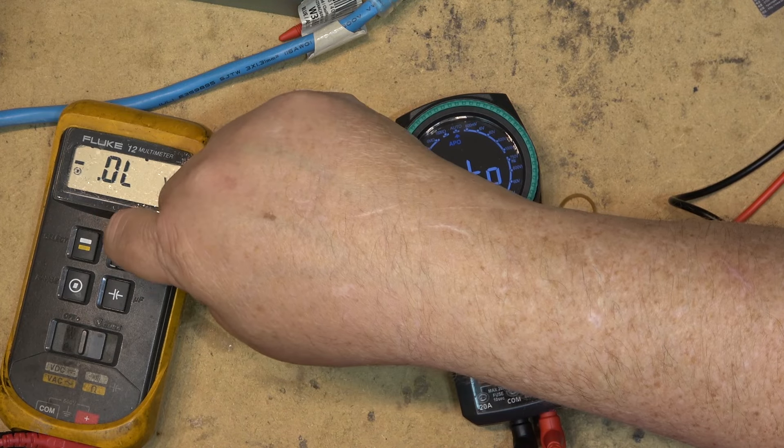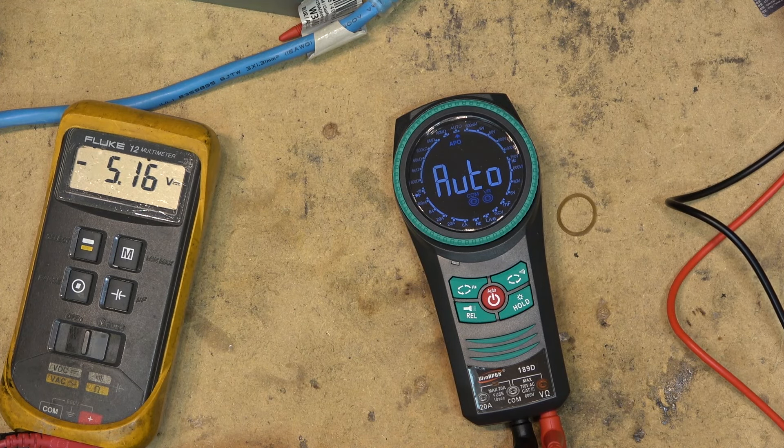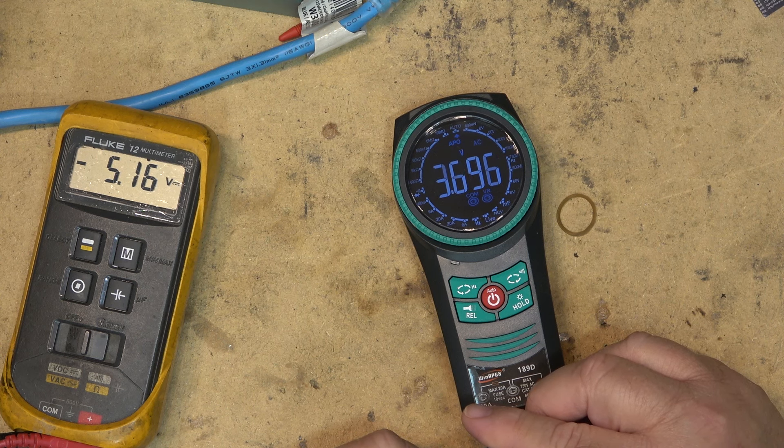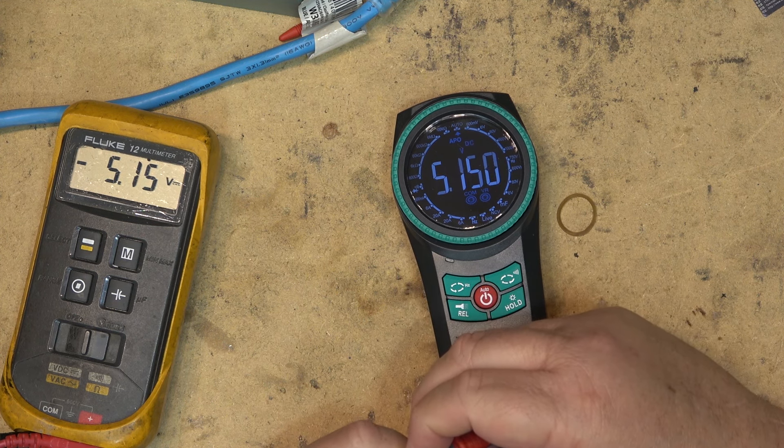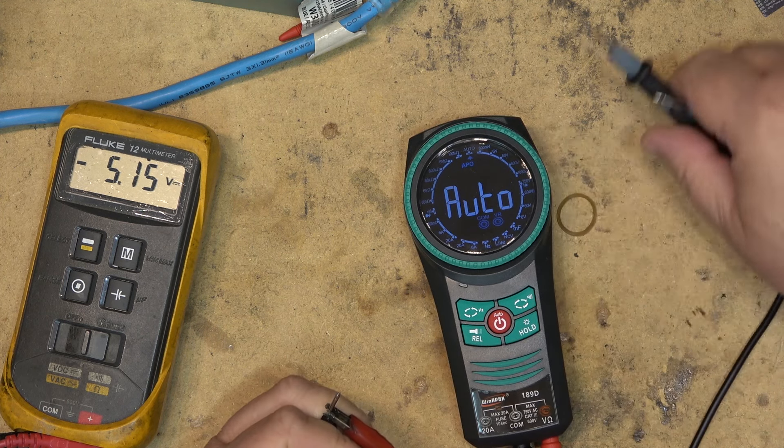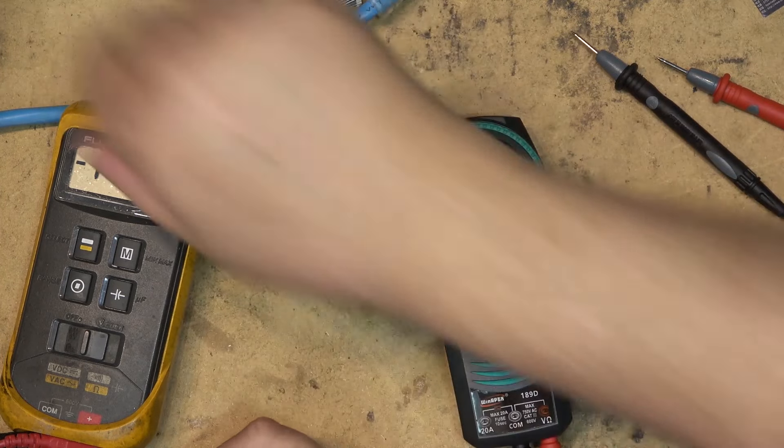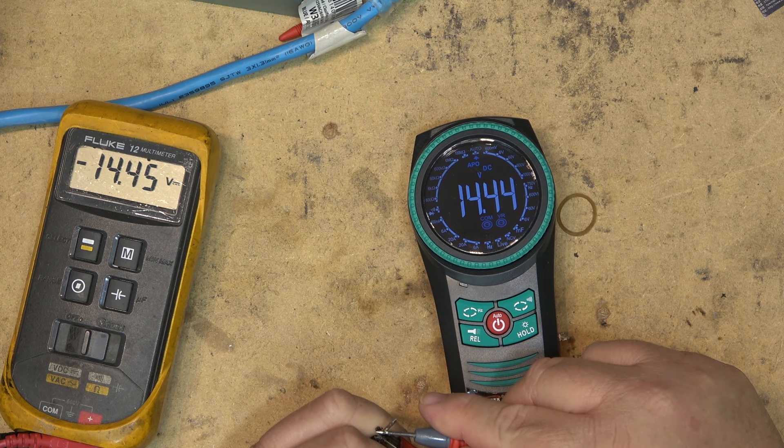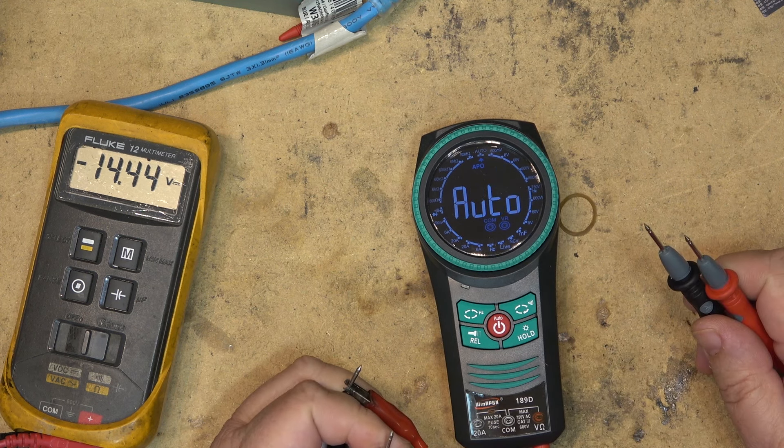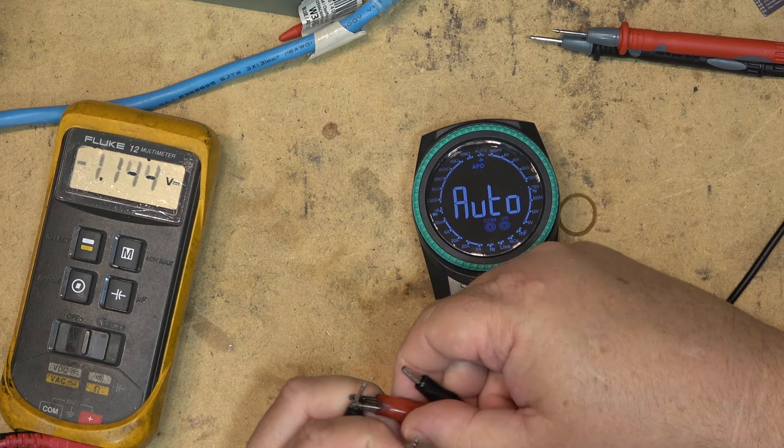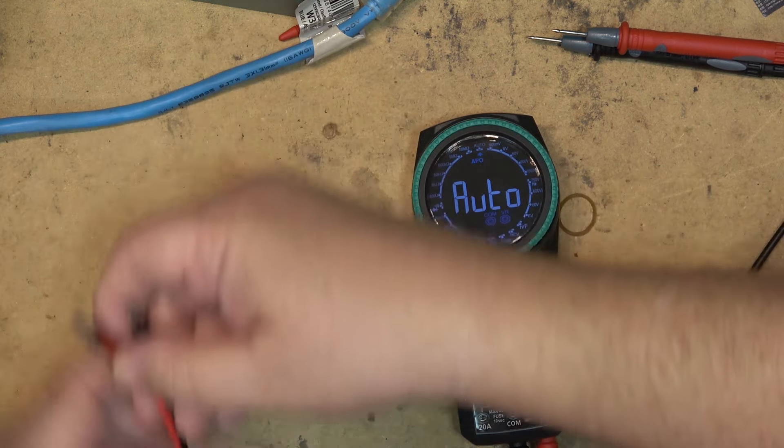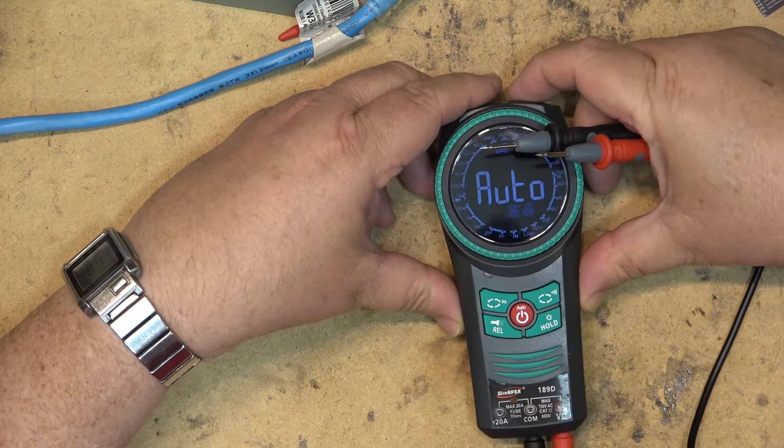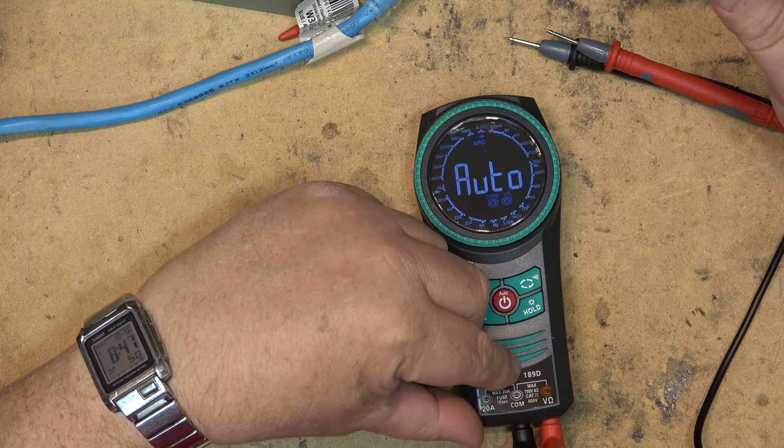I set my power supply to 5.1 volts. We'll bring the Fluke meter in and clip on the Fluke meter and check some voltages. 5.1 volts on the Fluke, and 5.1 volts on this meter. If I turn the power supply up to 14.44, it shows 14.44 exactly the same. So we know that works.